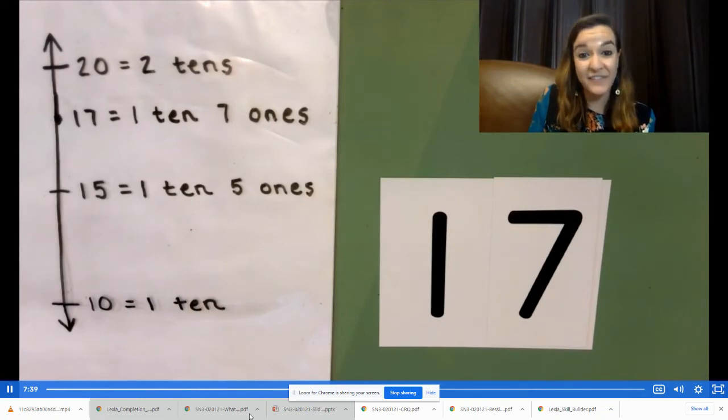Let's say that in unit form. One ten, seven ones rounded to the nearest 10 is two tens. Let's try another one.